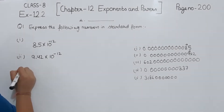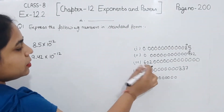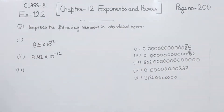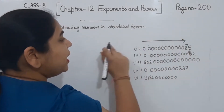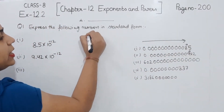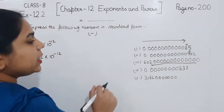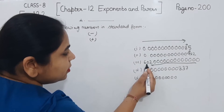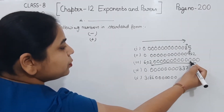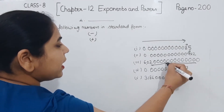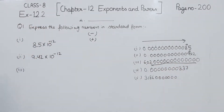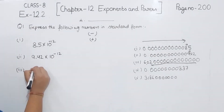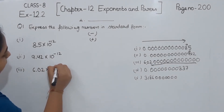Now comes part 3. For this number, we have to shift the decimal. Here in parts 1 and 2 we were shifting the decimal from left to the right, that's why the power was negative. Now we have to shift the decimal from the right hand side to the left hand side, then the power will be in the positive form. Counting the places: 1, 2, 3, 4, 5, 6, 7, 8, 9, 10, 11, 12, 13, 14, 15. So we have to transfer the decimal 15 places, and I am going to write this as 6.02 multiplied by 10 to the power 15.